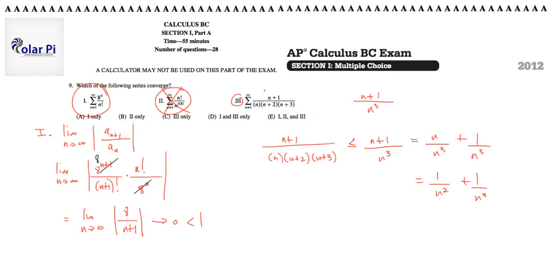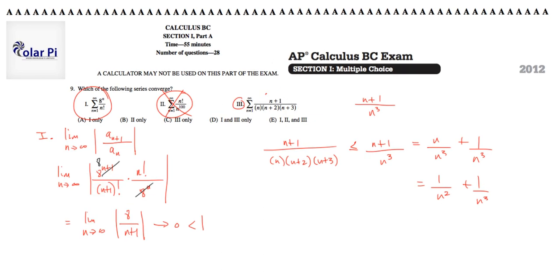Therefore, part three is also correct. Both series one and three have convergent series, and therefore the correct answer is D — one and three only. All right, take care.